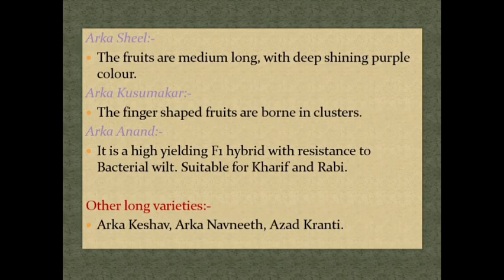Arka Sheel — fruits are medium long with deep shining purple color. Arka Kusumakar — the finger-shaped fruits are borne in clusters. Arka Anand — it is a high-yielding F1 hybrid with resistance to bacterial wilt, suitable for kharif and rabi. Other long varieties: Arka Keshav, Arka Navneet, and Azad Kranti.